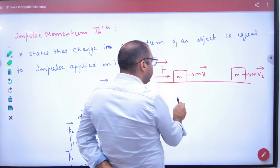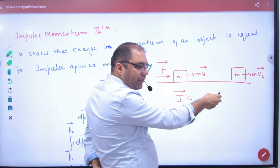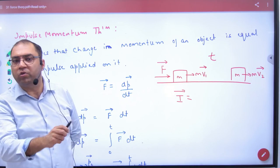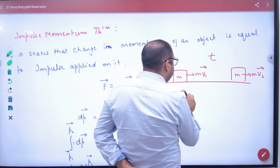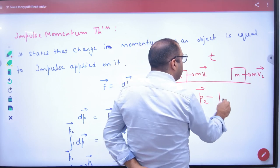So this theorem states that the impulse for some time, the impulse vector, will be equal to change in momentum vector.